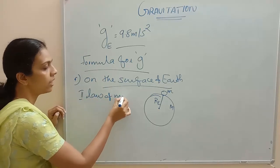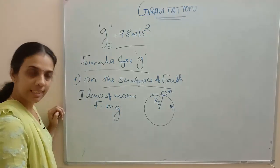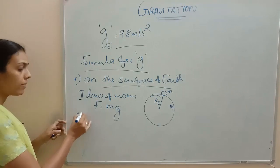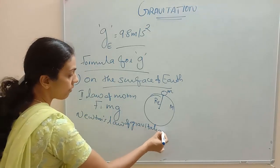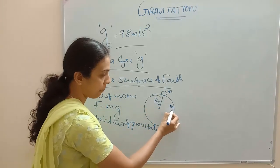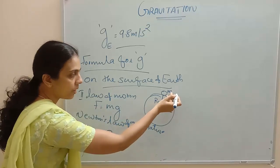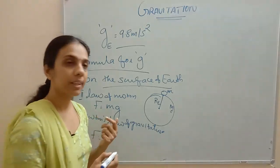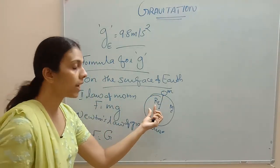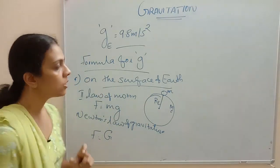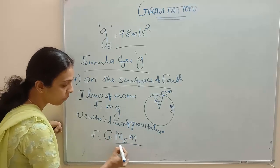We already know that the force F acting on an object on the surface of Earth equals m times g. And by Newton's law of gravitation, we can write the force acting between this object and the mass of Earth M_E as F equals G times M1 times M2 divided by R squared. We are considering the distance to the center of Earth, which is R_E, since the height of the object is negligible compared to R_E.